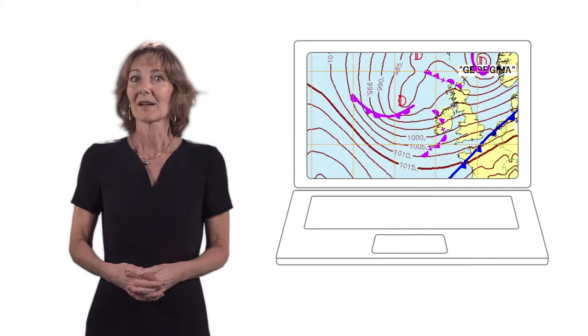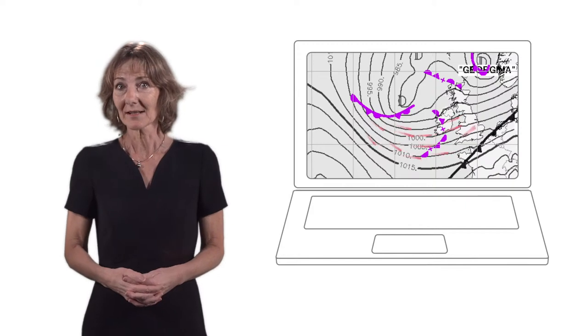The surface pressure chart shows highs and lows and the isobars between. Using Bayes-Ballot Law, we can visualize the wind direction and intensity.